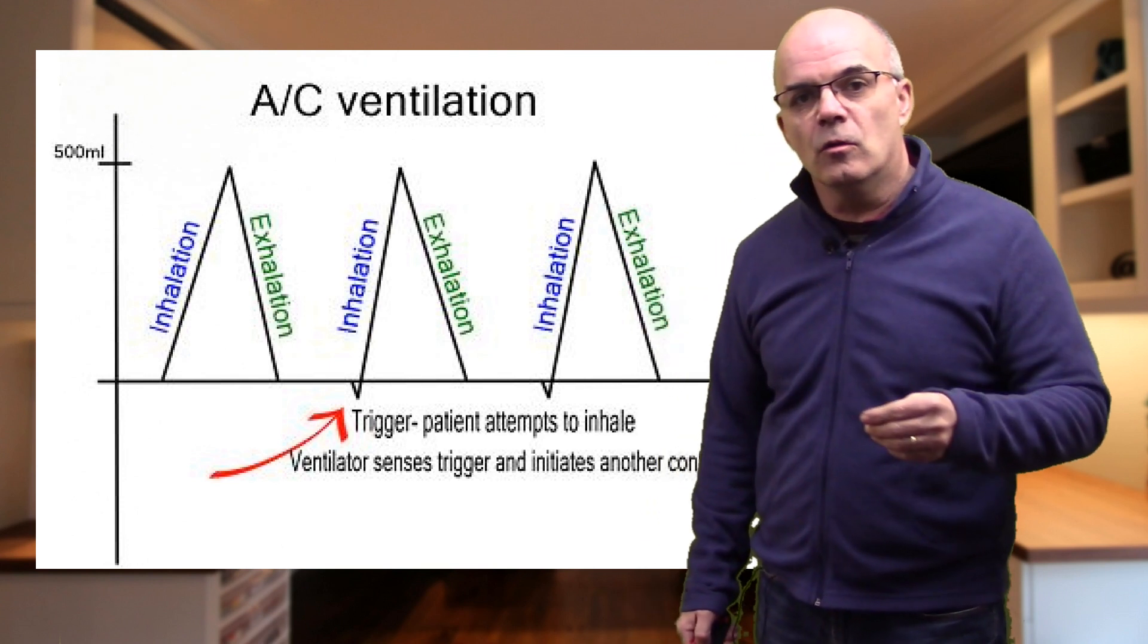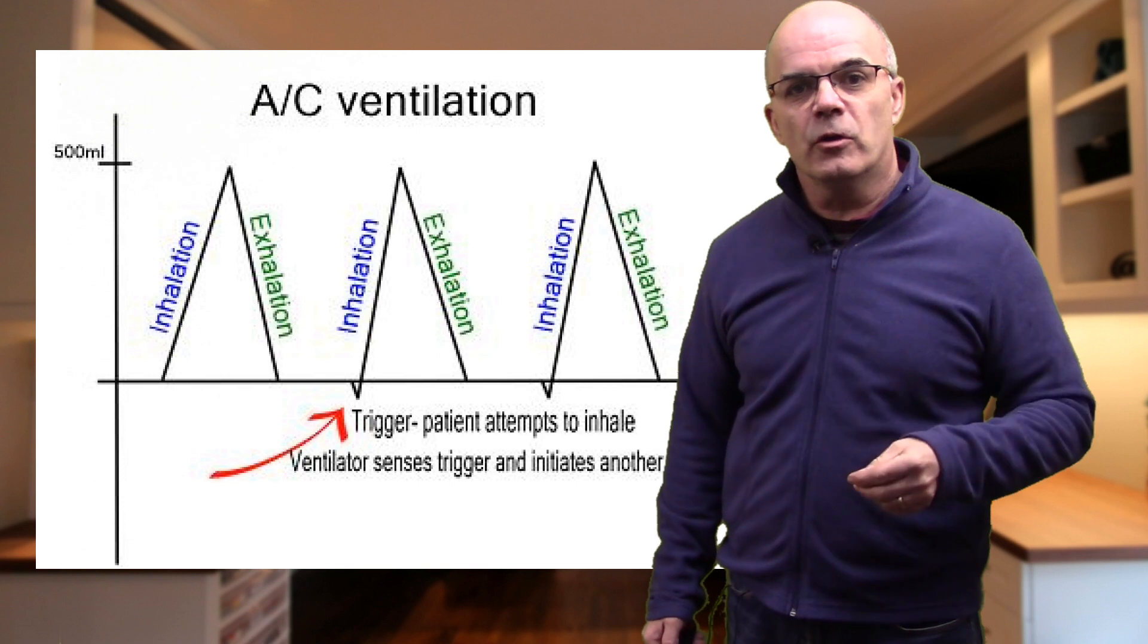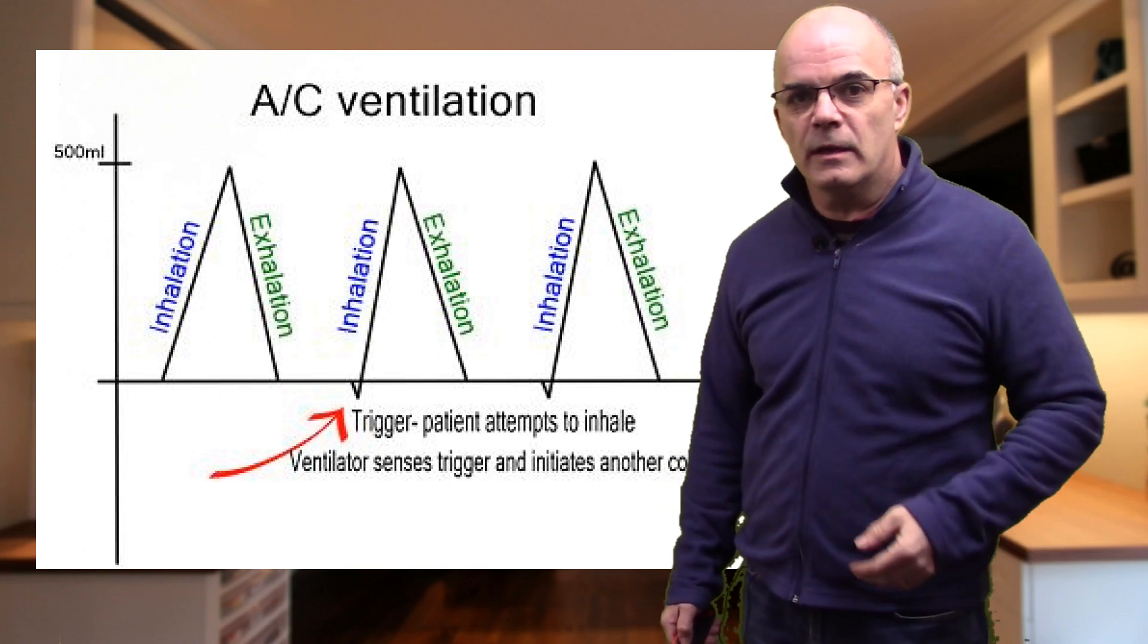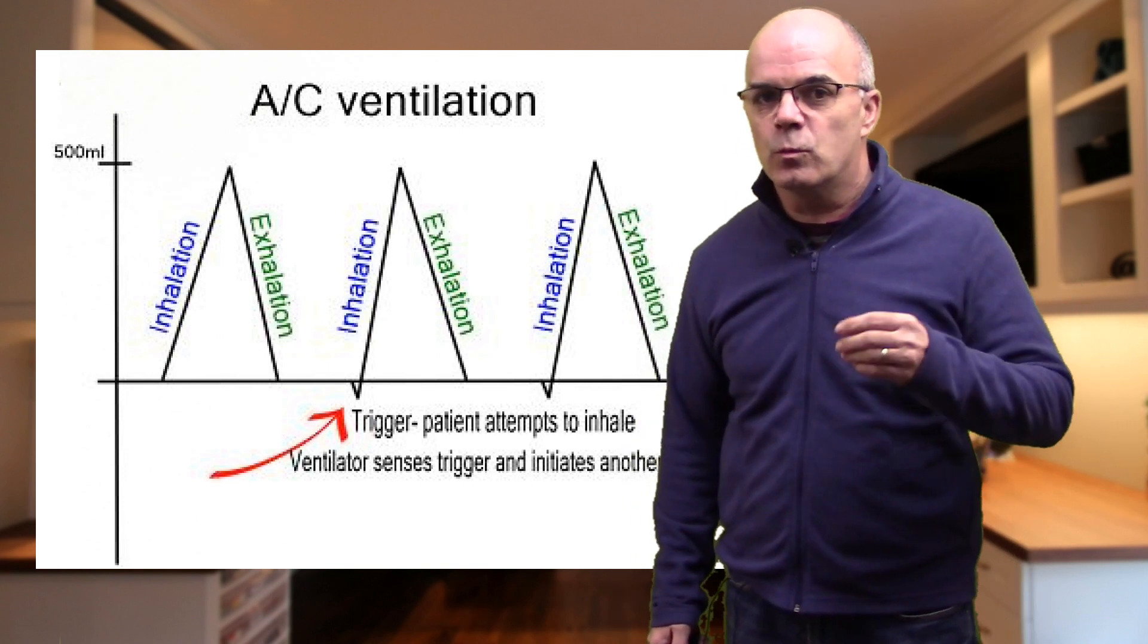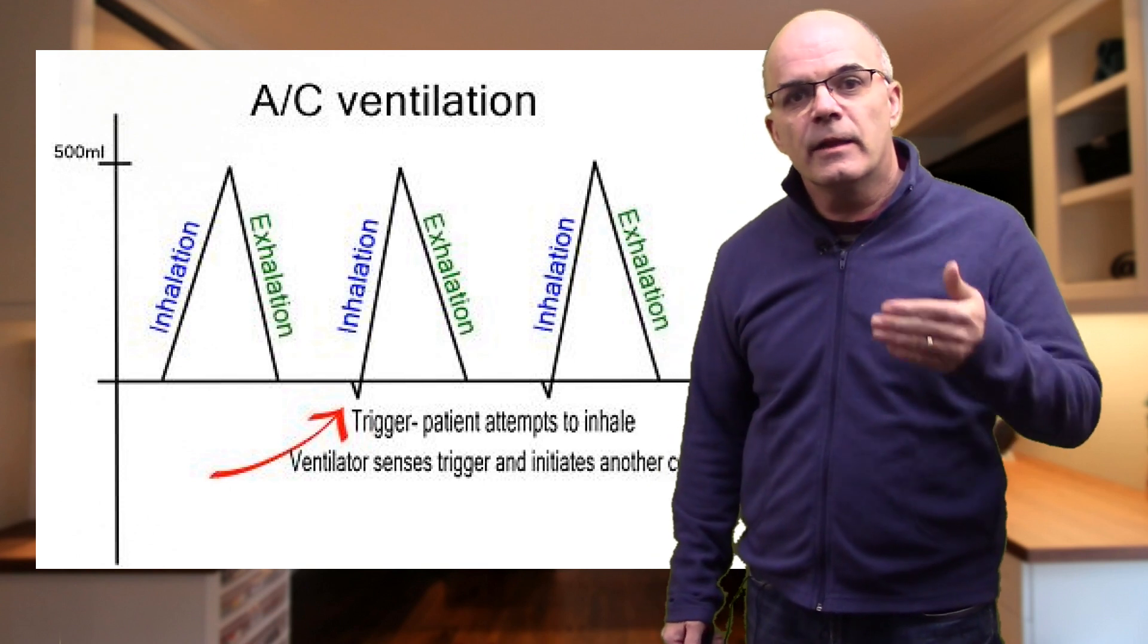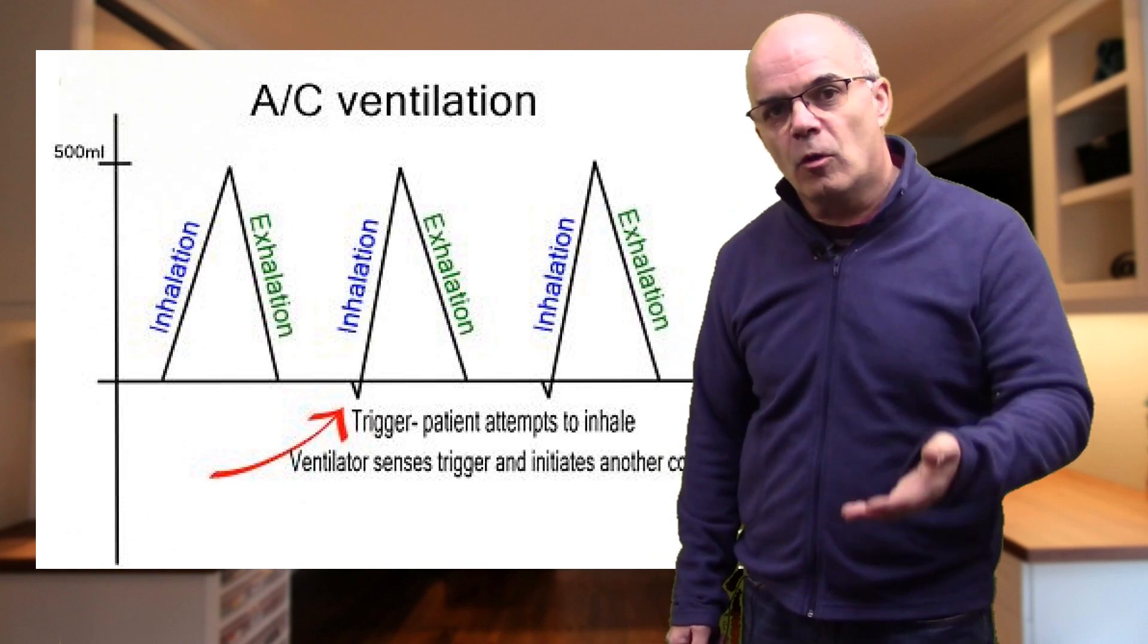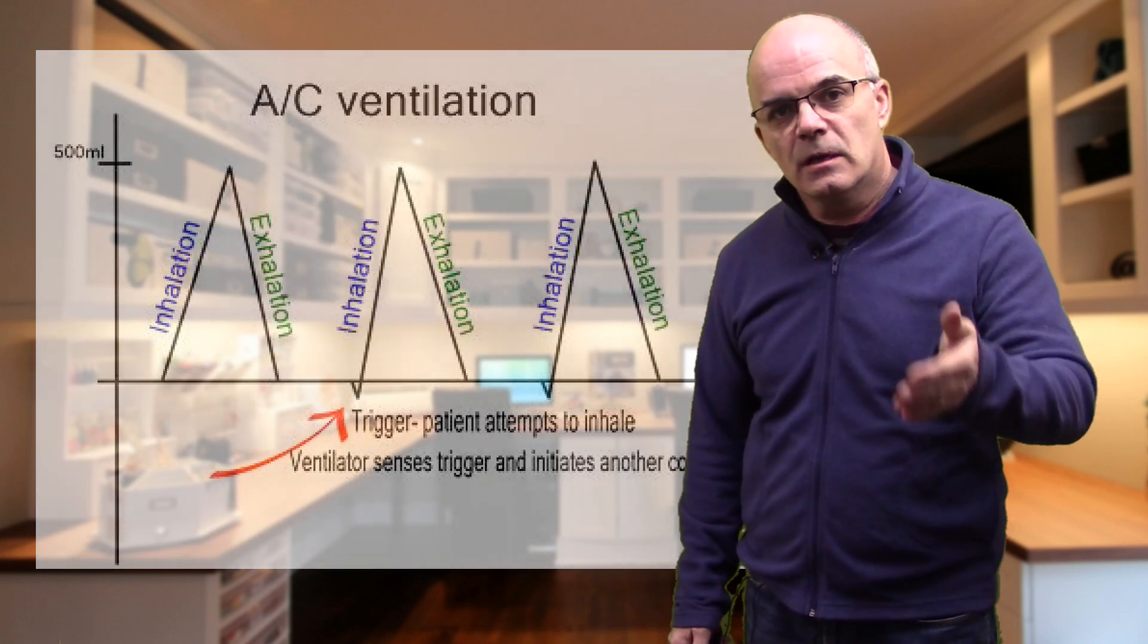The advantage of assist control ventilation is that it guarantees a set minute volume and has a low work of breathing for the patient. The disadvantage is that it does not compensate for the patient's work of breathing, so if the patient breathes really quickly they can hyperventilate, which drops their carbon dioxide and can also cause alkalosis and hypotension.